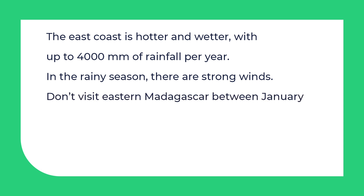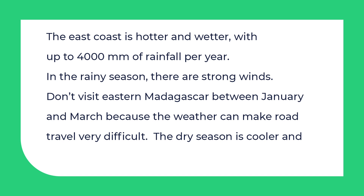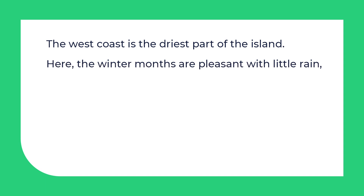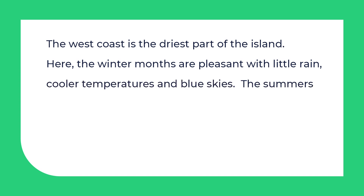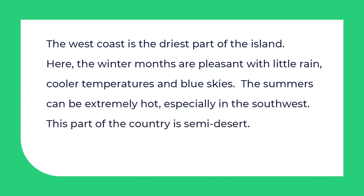Don't visit eastern Madagascar between January and March, because the weather can make road travel very difficult. The dry season is cooler and more pleasant. The west coast is the driest part of the island. Here, the winter months are pleasant with little rain, cooler temperatures and blue skies. The summers can be extremely hot, especially in the southwest. This part of the country is semi-desert.